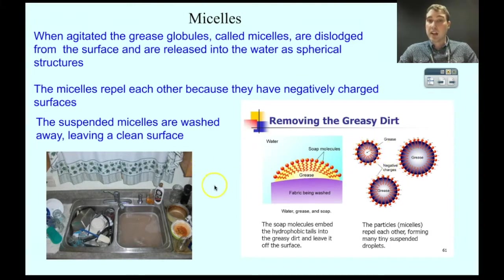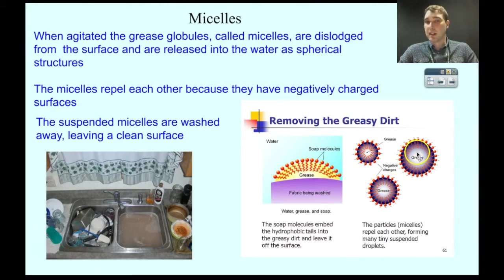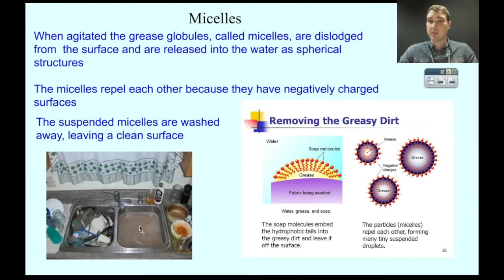So you agitate your greasy stain with your soap, you form micelles, and they float around in water because they all have surface negative charges so they repel each other. This one won't get too close to this one because of the negative charge on the outside — they have a similar charge so they repel. What that leads to is your surface being clean and your water getting all these micelles with grease inside. As we can see in this dishwater, that kind of brown colour is all those micelles being produced from the grease that was on these dishes.